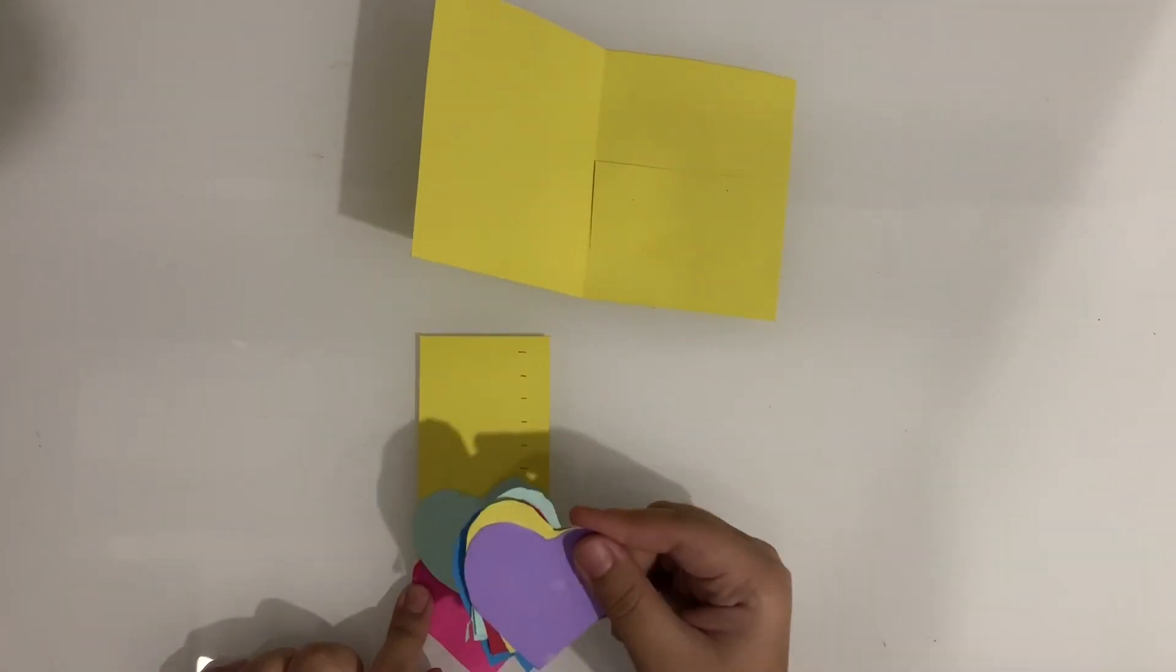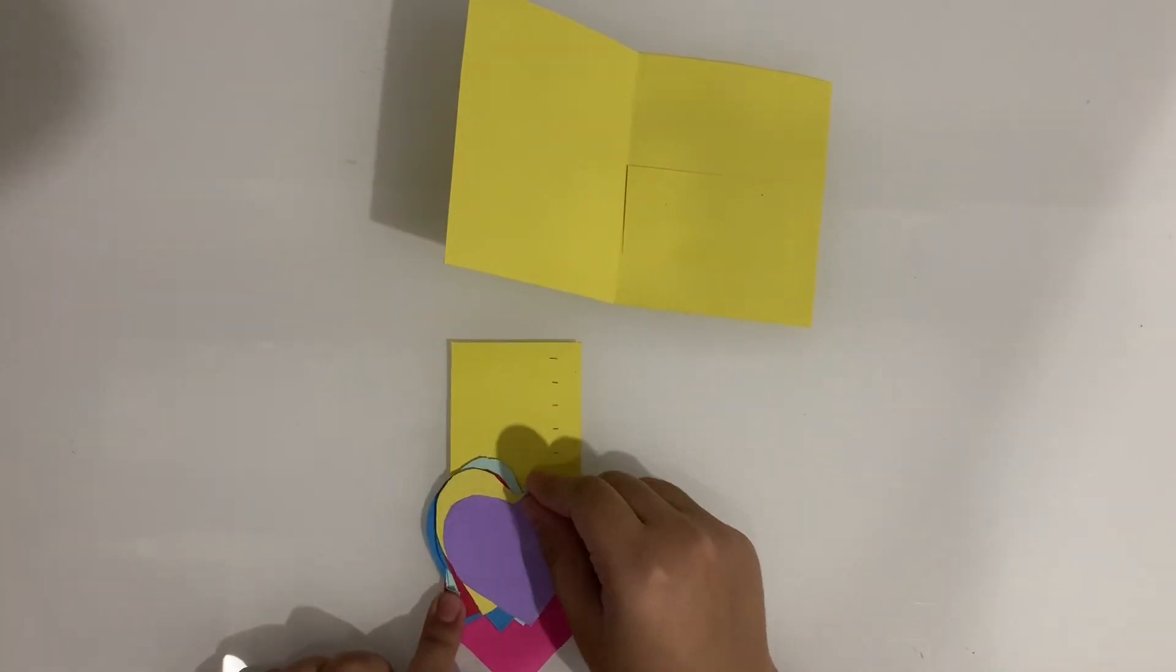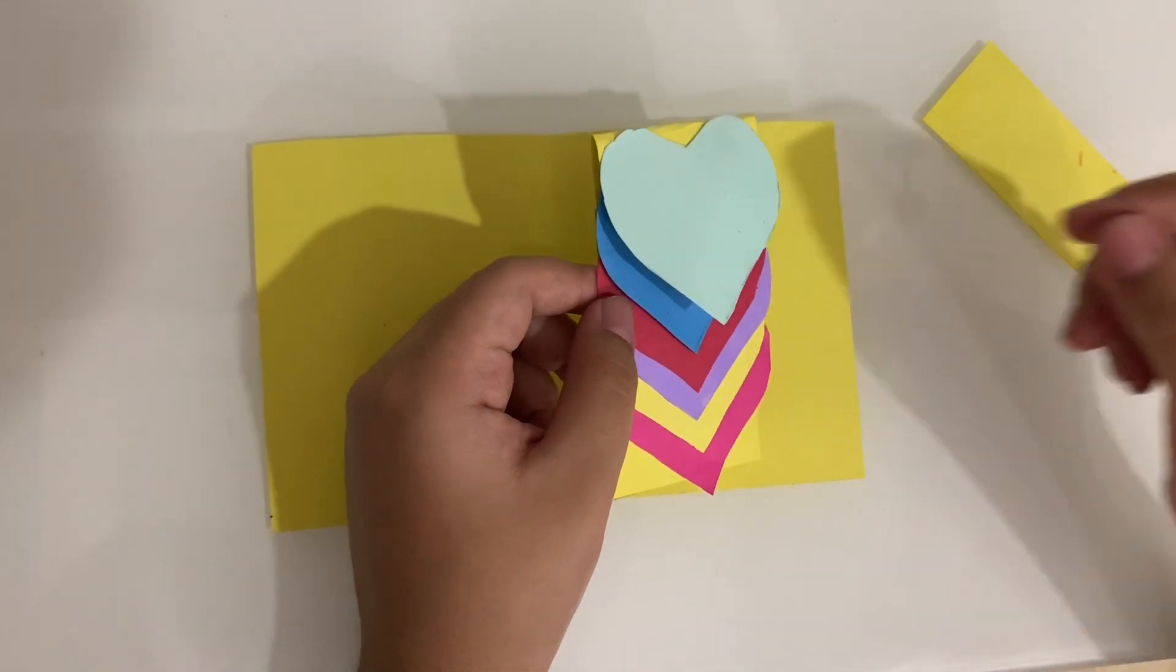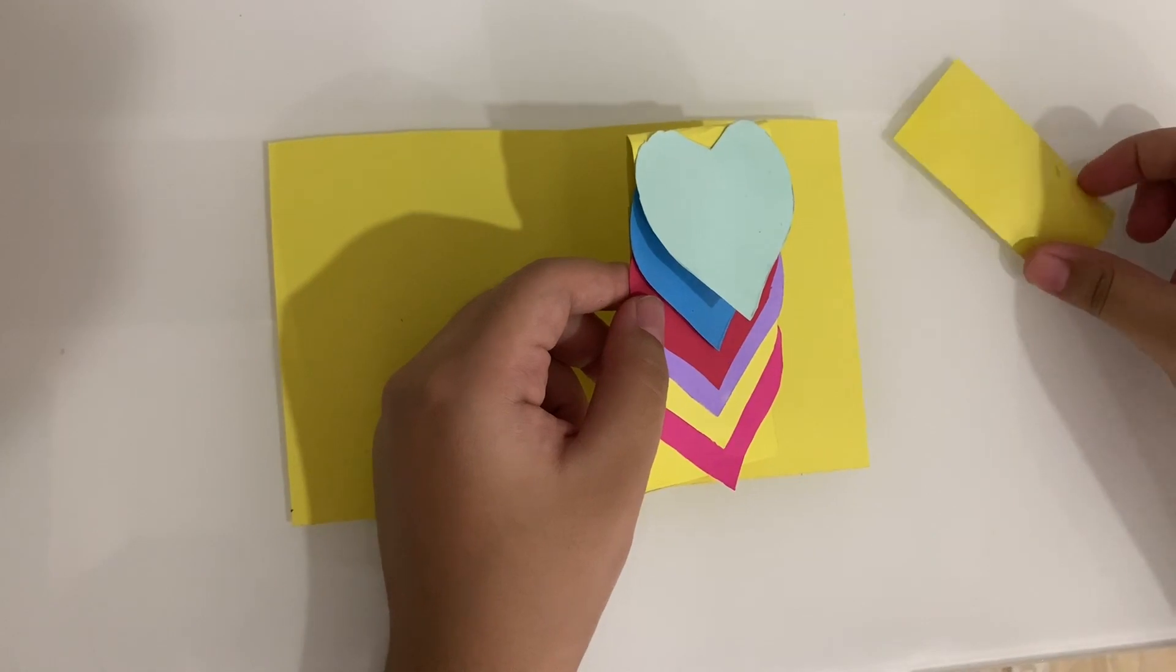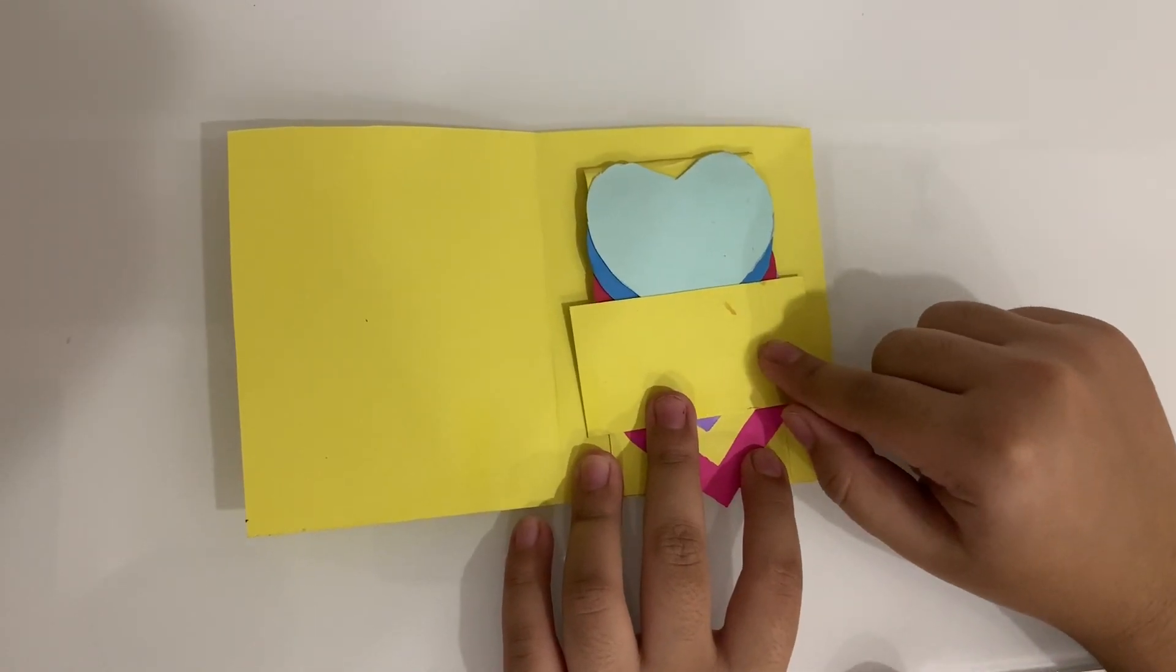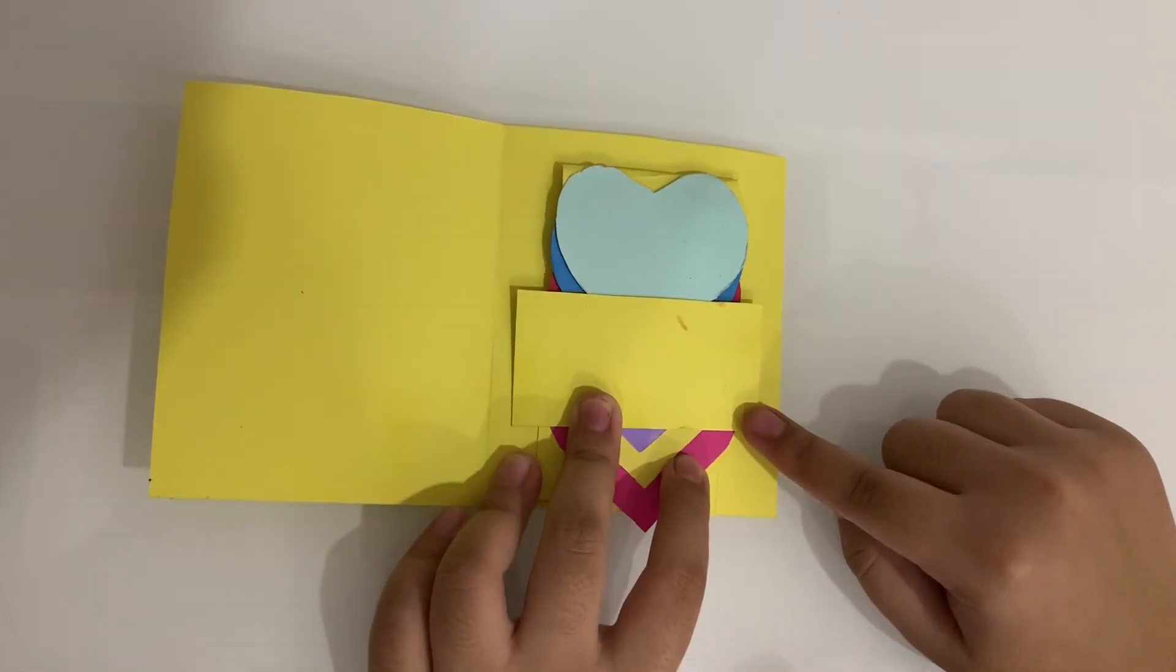Now we are going to stick the hearts on the paper. Once you are done sticking the hearts on the paper, you need to take the other smaller paper and measure the sides that are not touching the heart and mark them.